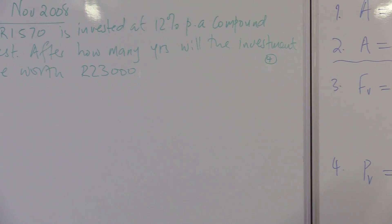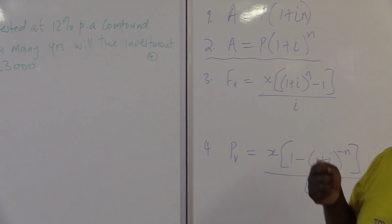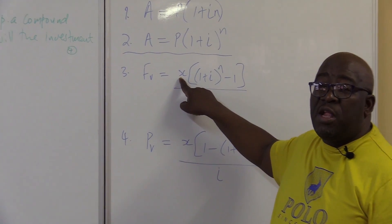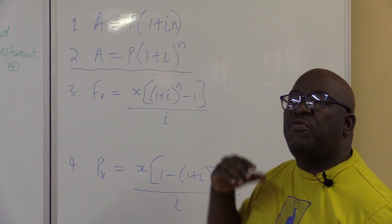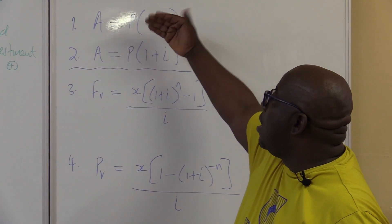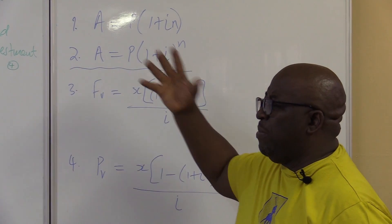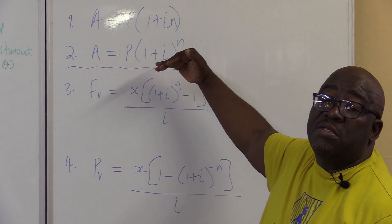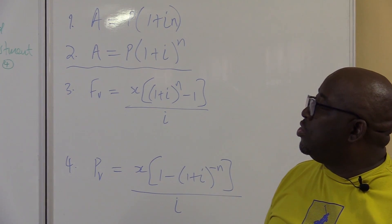Remember one thing: how do you know that it's compound interest? If there are no regular payments paid every month, you forget about the future value and present value formulae — those require regular payments every month. It's usually the second part of your question. When it's compound interest, it's a once-off payment with no regular payments made. The question will tell you whether it is simple interest or compound interest. With compound interest, we use words like 'reducing balance,' then you'll know that it is compounded interest.